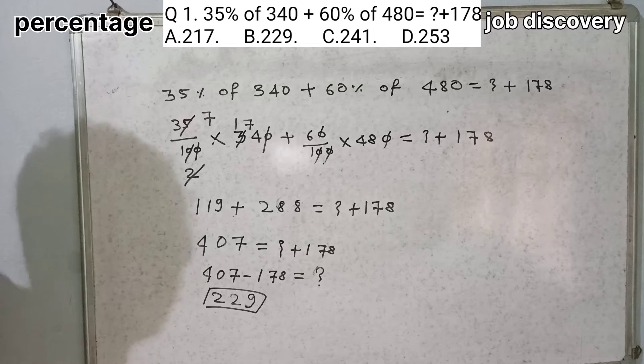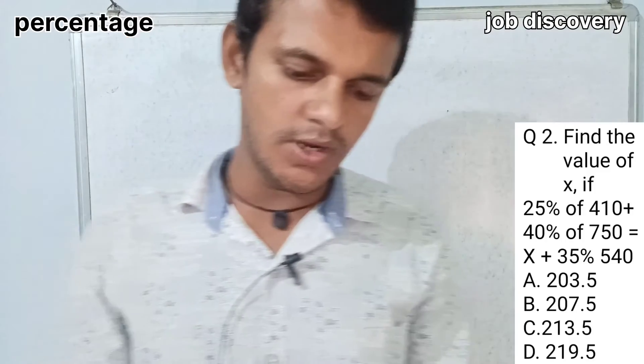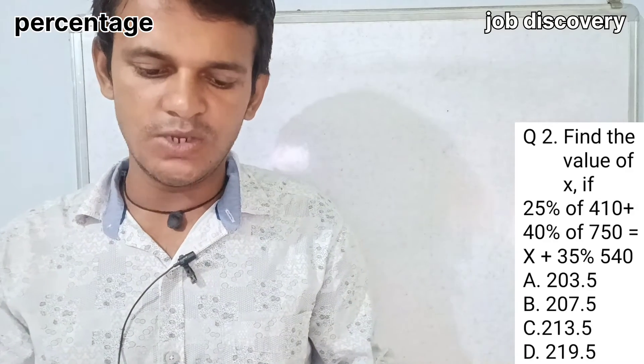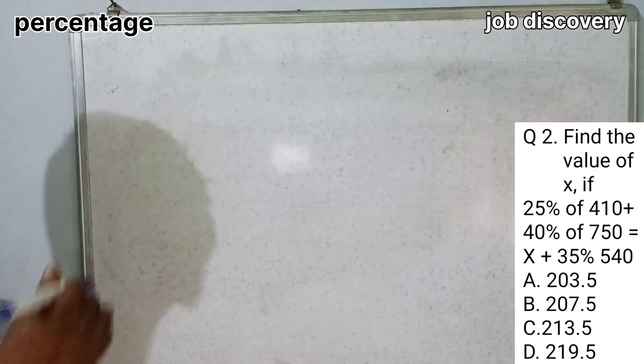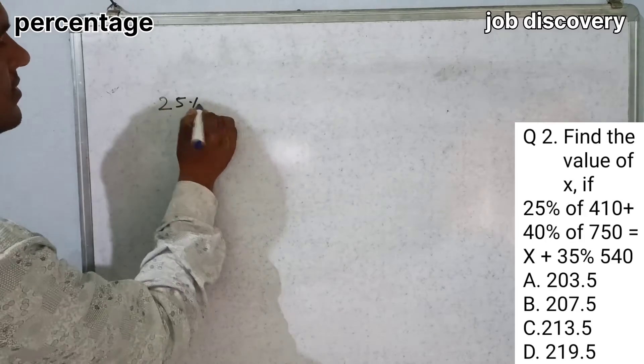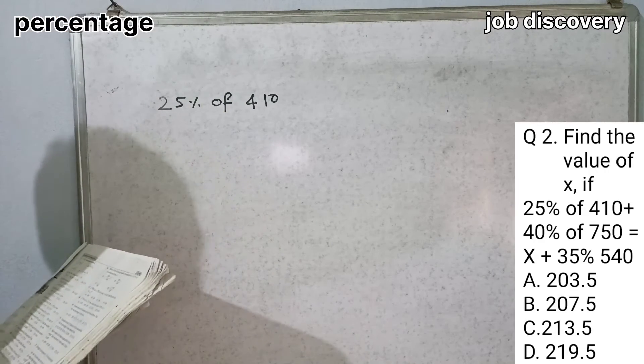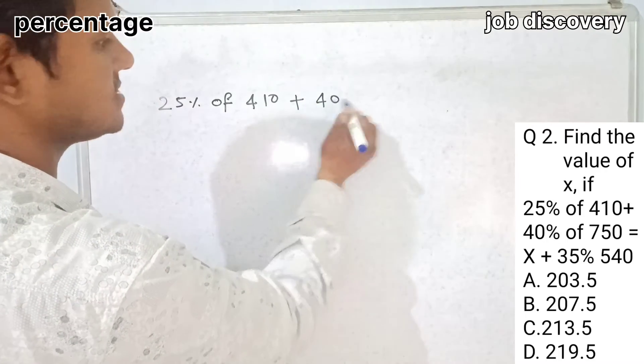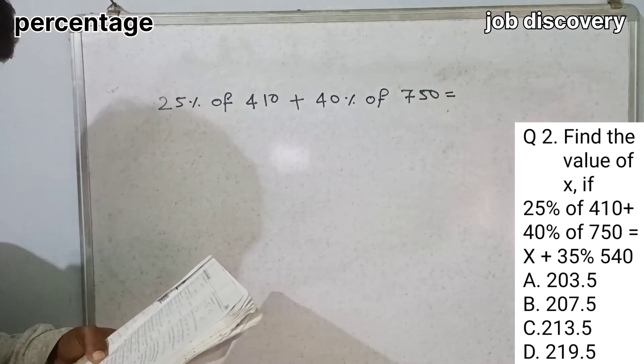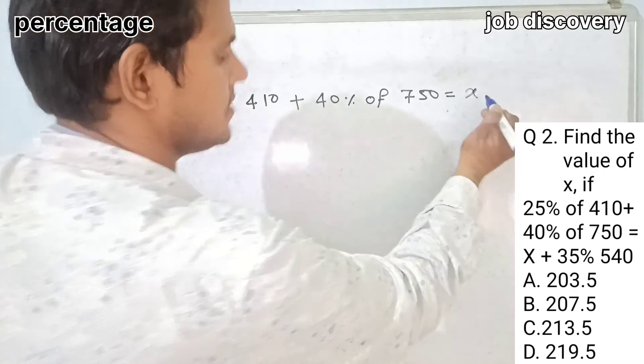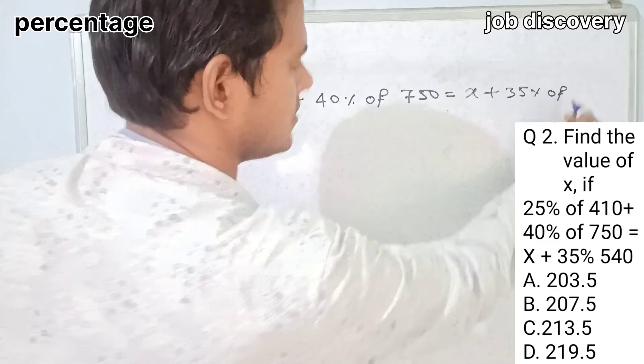Find the value of X if 25% of 410 plus 40% of 750 is equal to X plus 35% of 540.